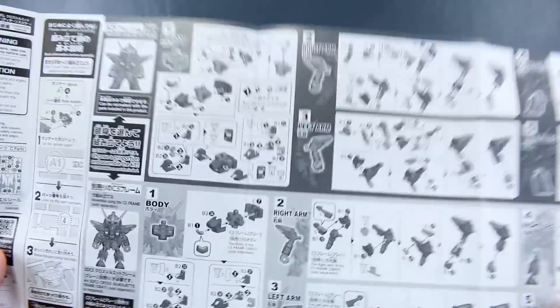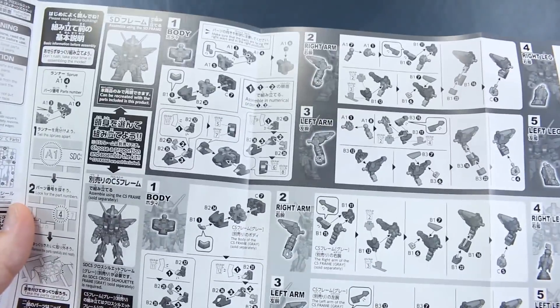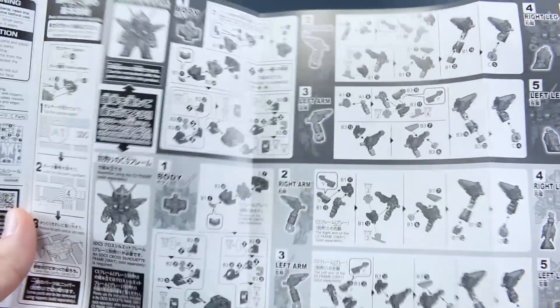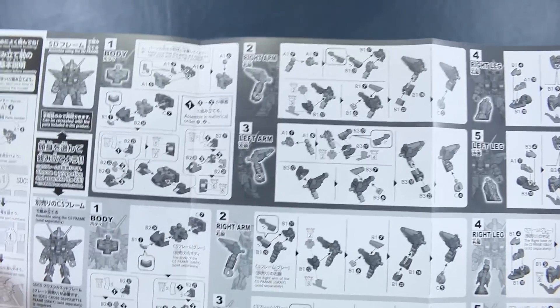These kits don't use any polycaps, so that's pretty fun, and here you can see the construction, how you're going to build it. If you want to build it in the SD form or the cross silhouette form, you just follow whichever form you want.